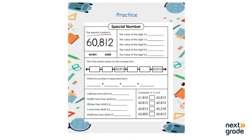Odd numbers are numbers that cannot be divided evenly — for example, 3 cannot be divided by any number other than itself, so that is called an odd number. For 60,812, we look at each of its digits and we see that all of the digits appear in the even number section, so we call this number an even number.